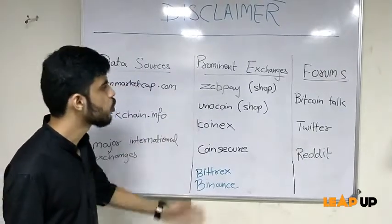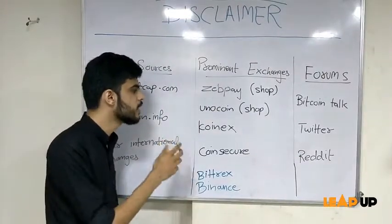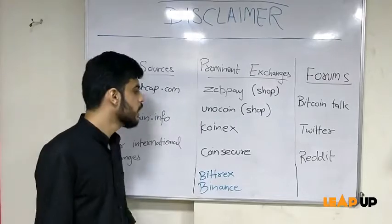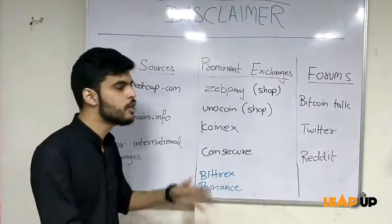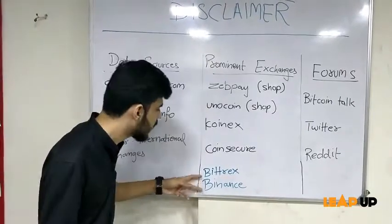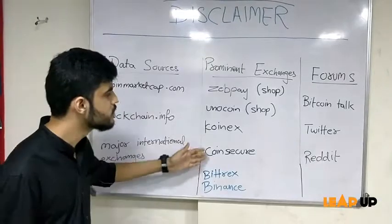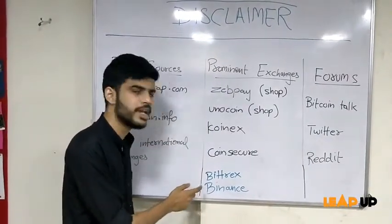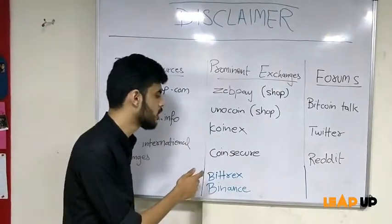The prominent Bitcoin shops in India include Zeppay and Unocoin, and the prominent Indian exchanges are CoinEx and CoinSecure. There are other international exchanges like Bittrex and Binance, which have a huge list of other cryptocurrencies that you can't directly buy with INR. So you will have to buy your cryptocurrencies through these Indian shops and exchanges and then transfer them to these online exchanges to buy and sell other cryptocurrencies.